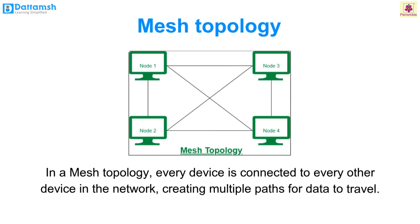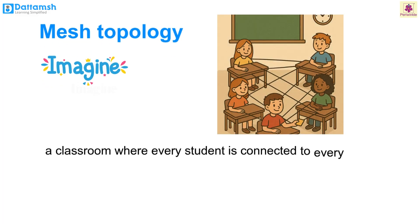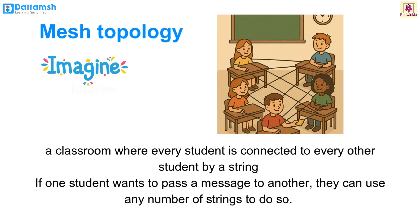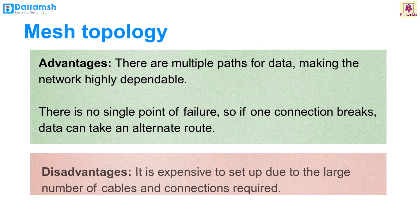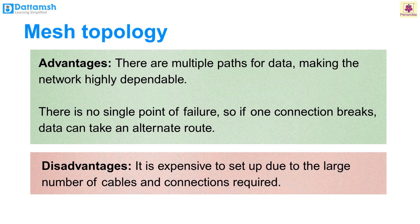Mesh topology. In mesh topology, every device is connected to every other device in the network, creating multiple paths for data to travel. Imagine a classroom where every student is connected to every other student by a string — if one student wants to pass a message, they can use any number of strings. Similarly, data can travel directly between devices or use different paths. Advantages: multiple paths make the network highly dependable; no single point of failure — if one connection breaks, data can take an alternative route. Disadvantages: expensive to set up due to the large number of cables and connections required.